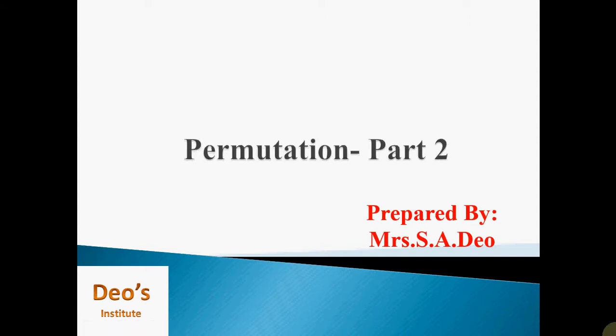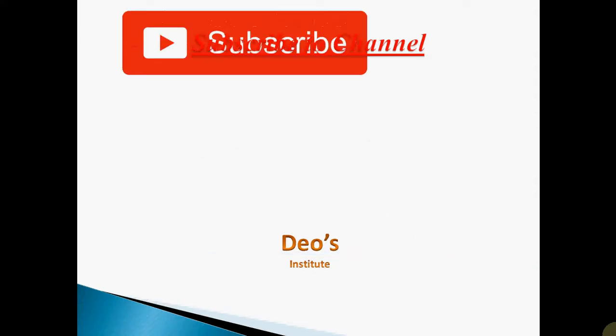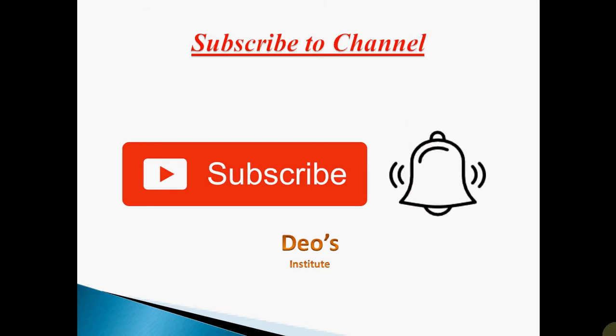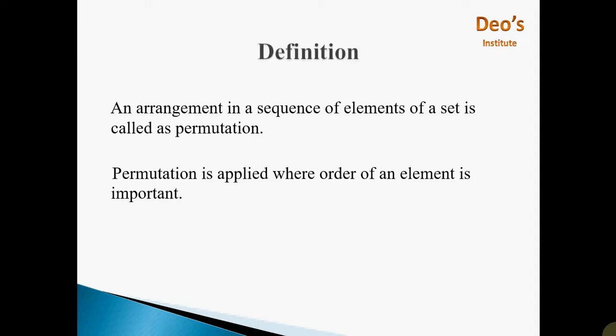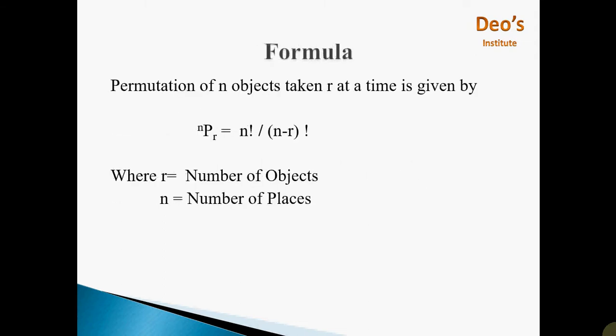Hello everyone, myself Mrs. Sonali Dev. I welcome you to my channel Dev's Institute. This is the second video on permutation, that is Permutation Part 2. I request you to subscribe to my channel and click on the bell icon to get instant notifications. As a review from the last lecture: permutation is an arrangement of elements in a sequence, and permutation is applied where order of an element is important. The formula is nPr = n! / (n - r)!, where n is the number of objects and r is the number of places.